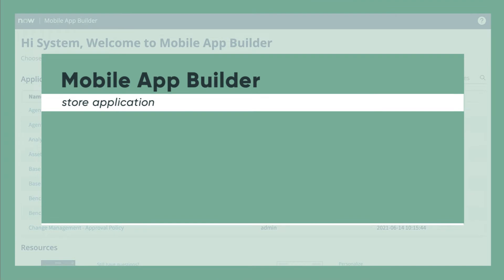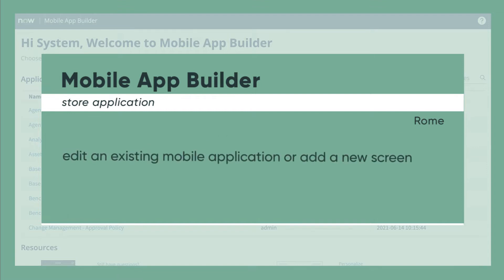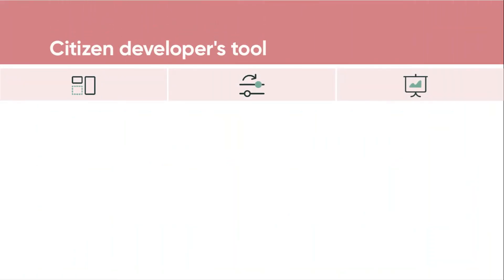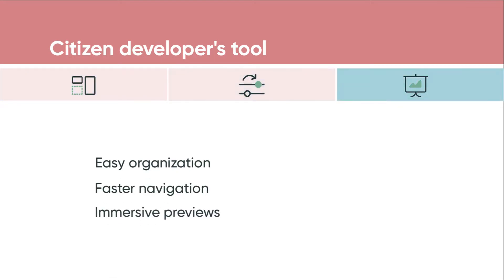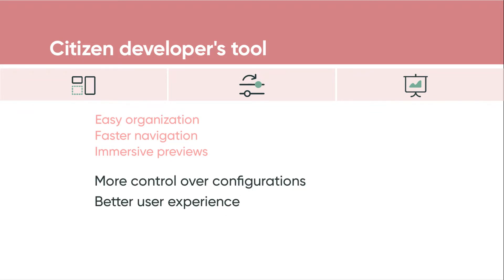Mobile App Builder was introduced to coincide with the Roam Family release. It's a tool used to create and edit ServiceNow configuration records for native iOS and Android apps. Most likely, you'll use Mobile App Builder to edit an existing mobile application configuration or add a new screen. It's a citizen developer's tool with easy-to-understand organization, faster navigation, and immersive previews, giving more context to the developer. In contrast to the previous tool, Mobile App Builder has more control over configurations and is a better user experience.